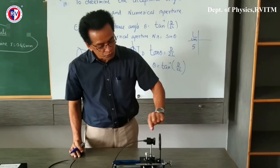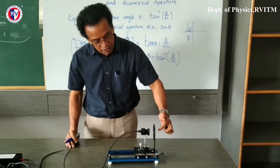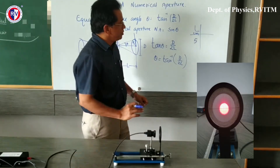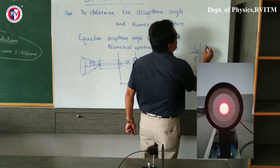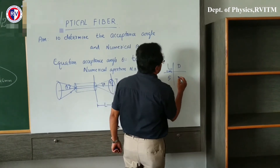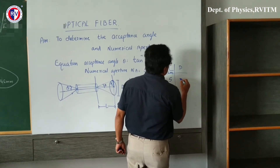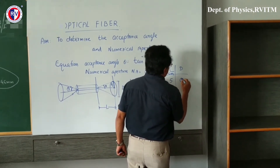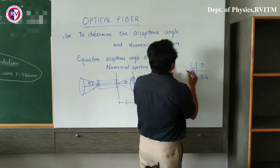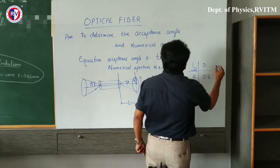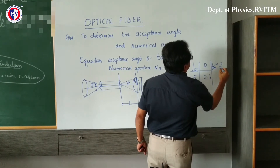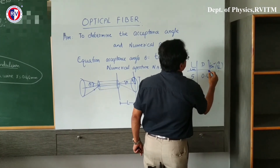When I put the light on, I get a bright spot of light on the screen. The diameter has to be measured in centimeters. In this case, the diameter D is 2.4 millimeters, that is 0.4 centimeters. From that, you find D by 2L, and from tan inverse of D by 2L, you get the value of theta.